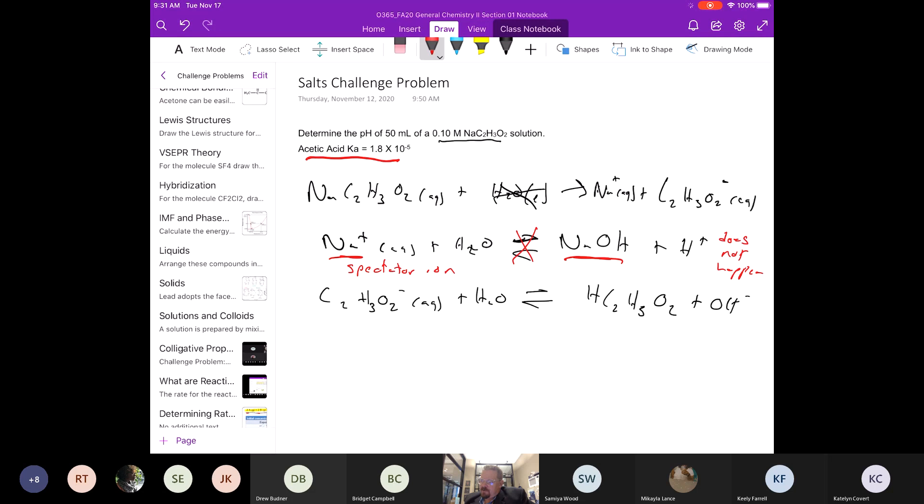The sodium is just a spectator ion. Where this, now if we look at this one, this is the weak acid acetic acid. This has a Ka, so this reaction is going to happen, and this is what's going to affect pH.